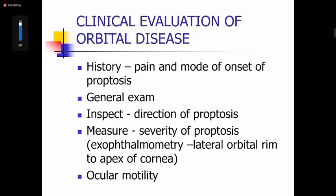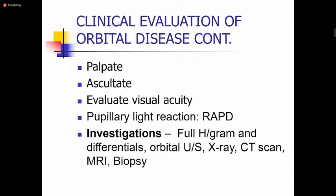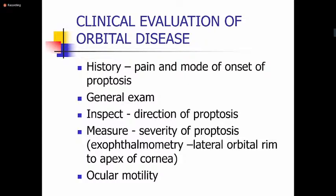Then you go to inspection — even before you touch the patient, the first thing you do is look. The most important thing is to note the direction of the proptosis, because the direction of the proptosis is always opposite to where the lesion is. For example, if the globe is displaced inferiorly, then the lesion must be superior. If the globe is displaced inferonasally, the lesion must be superotemporal.